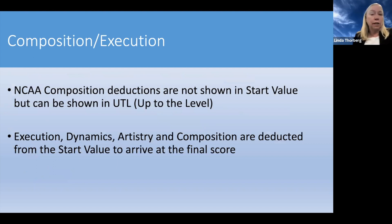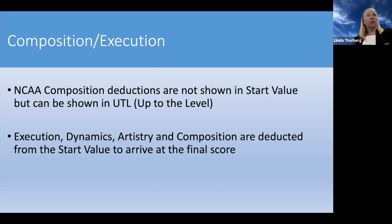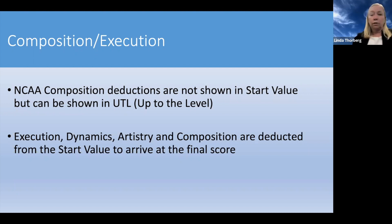NCAA has composition deductions that are not shown in the start value. You can see most of them on the UTL card — the up-to-the-level card — but there are still a couple of things to be aware of that are not included there, and you would have the possibility to inquire on some of those. Deductions for execution, dynamics, artistry, and composition are all deducted from the start value to arrive at the final score. If your start value is 10.0 and total deductions are 4-tenths, the final score is a 9.6.